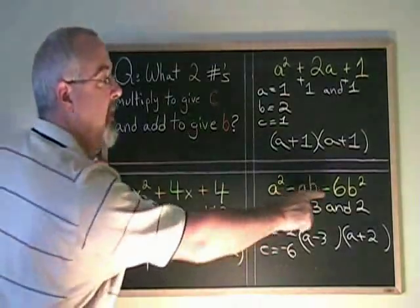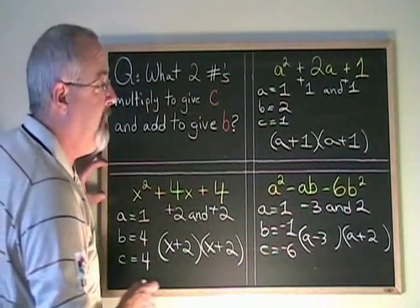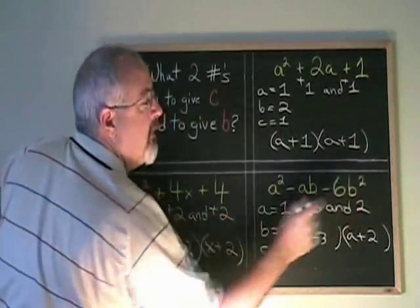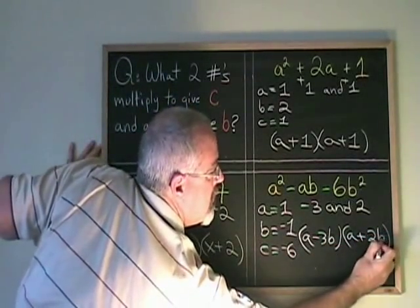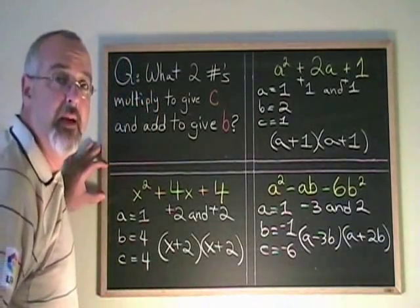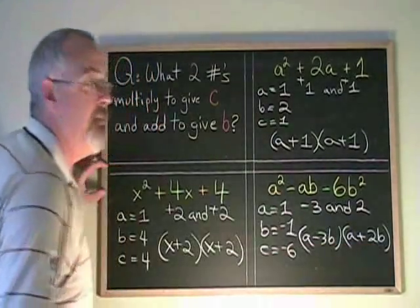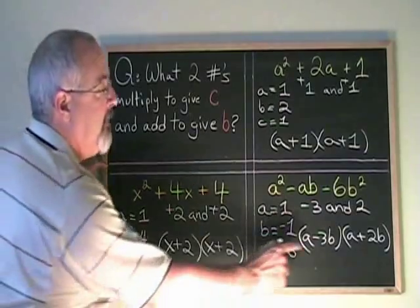And now it's time to deal with that extra letter b. All I have to do is put the square root of this b² at the end in this position here.